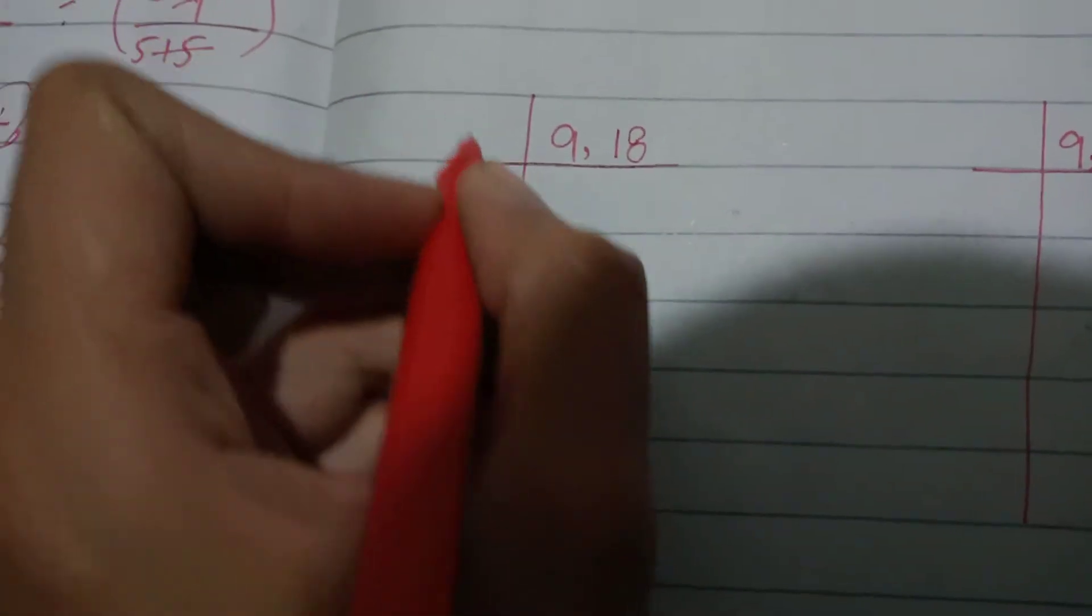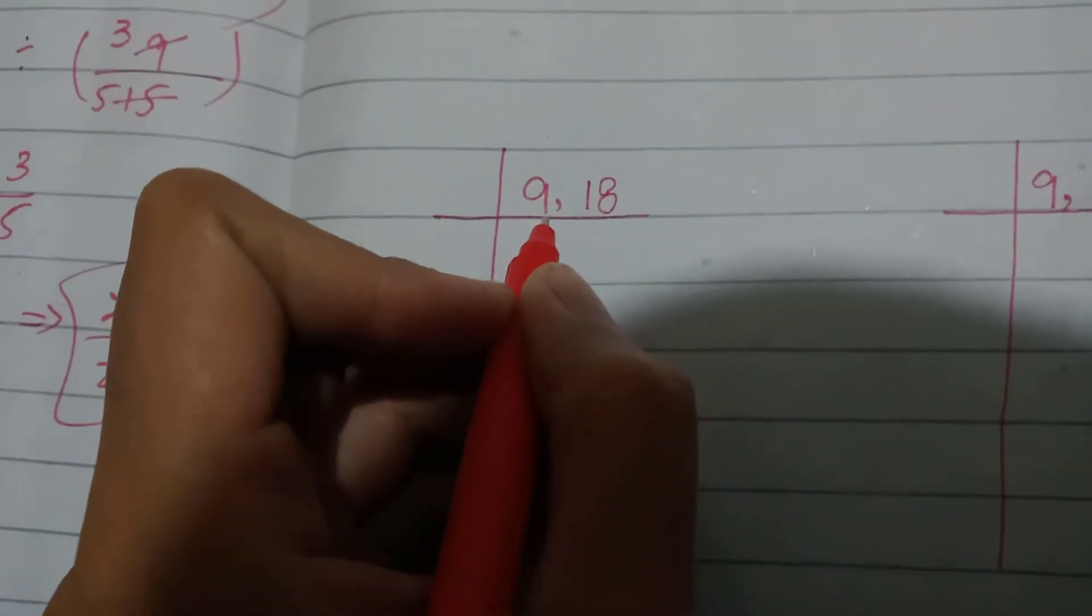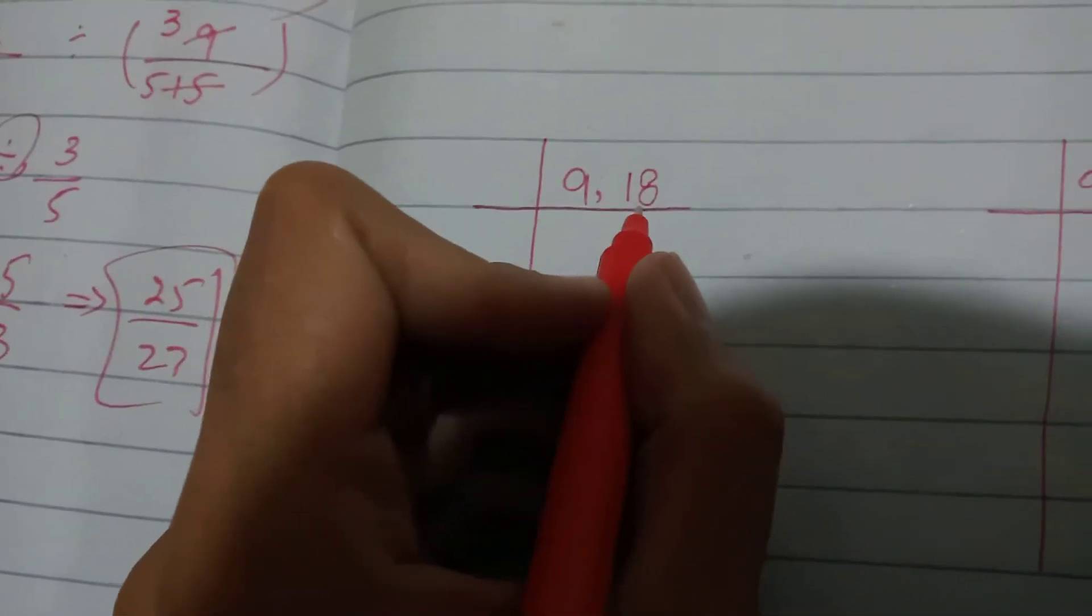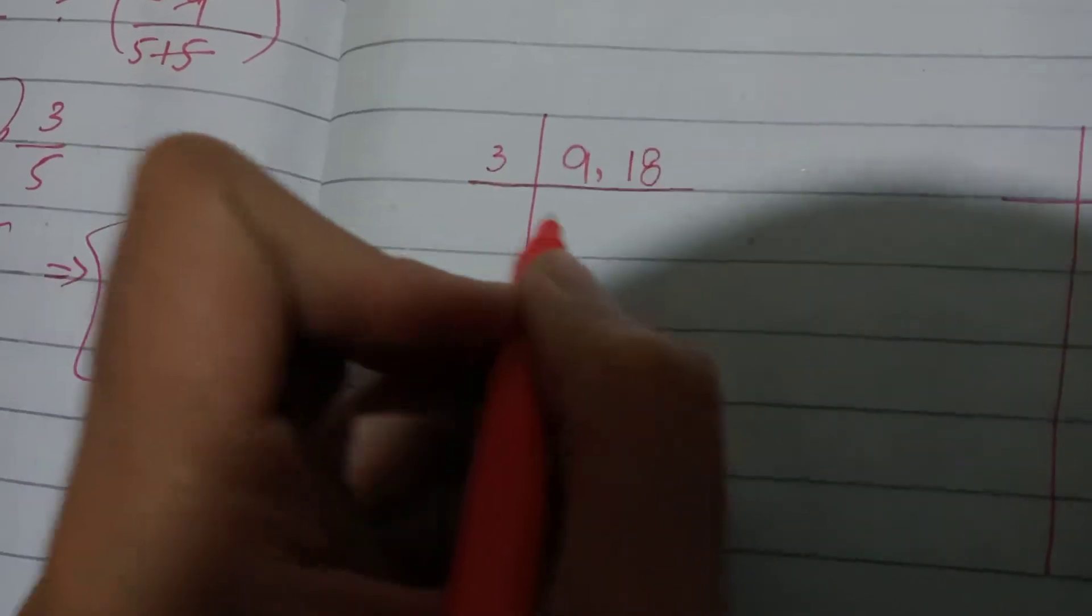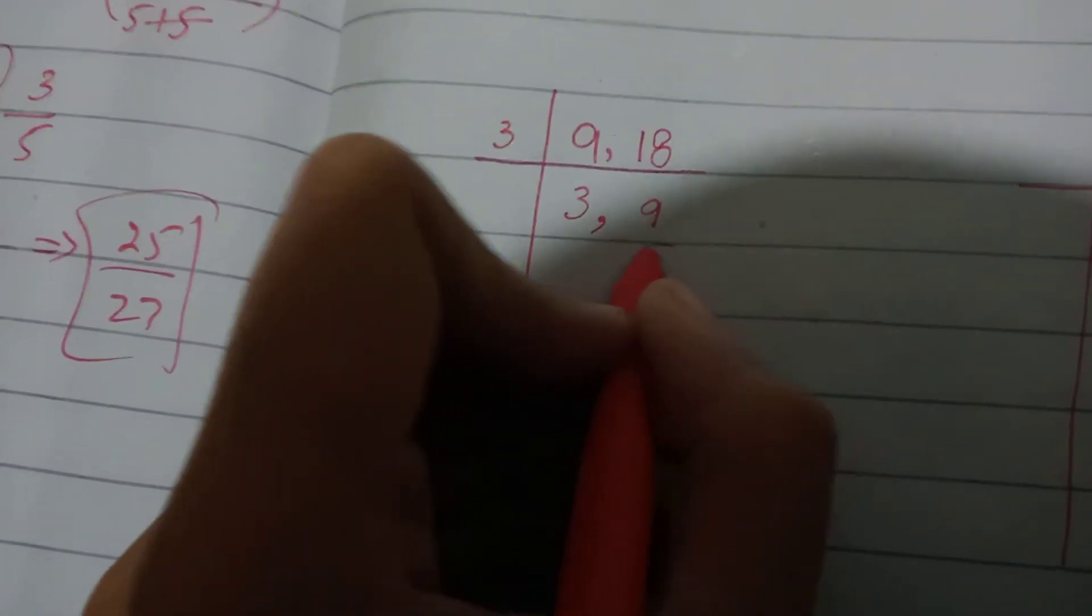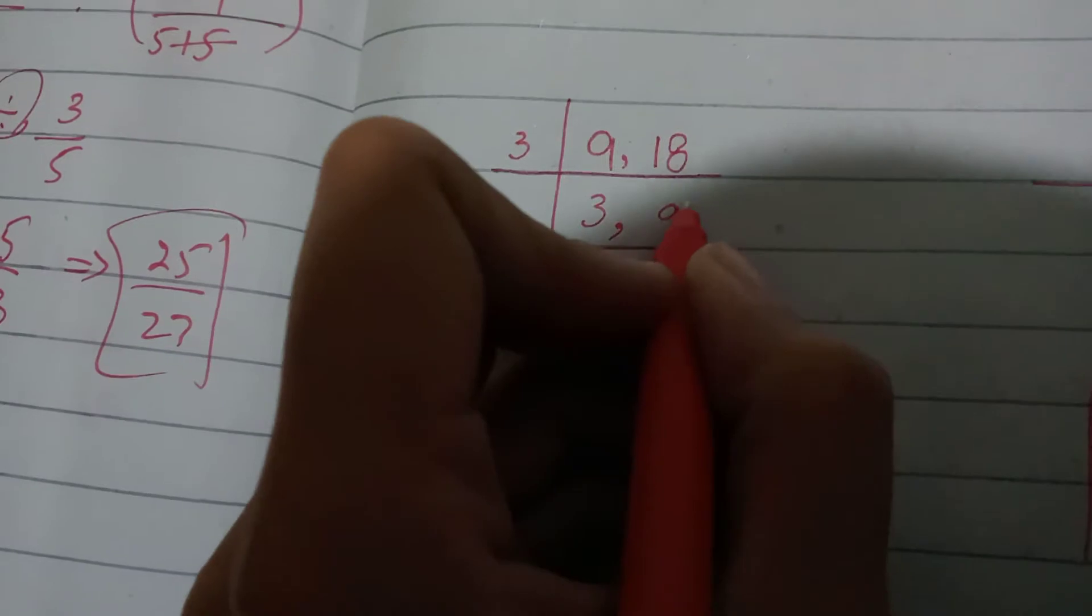First of all, you have to check out the divisibility. Students, 9 and 18 are both divisible by 3, so let's start: 3 divides into 9, and 3 divides into 18.